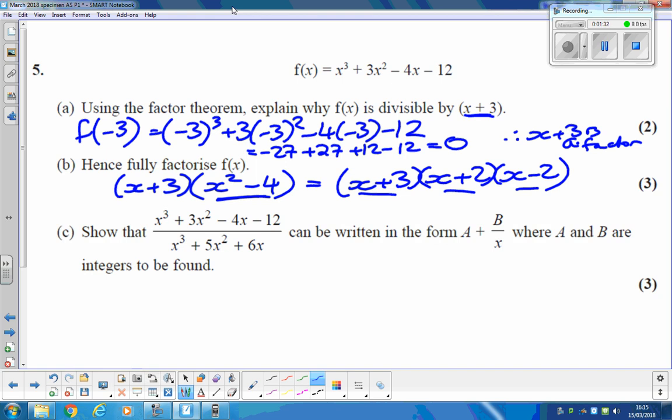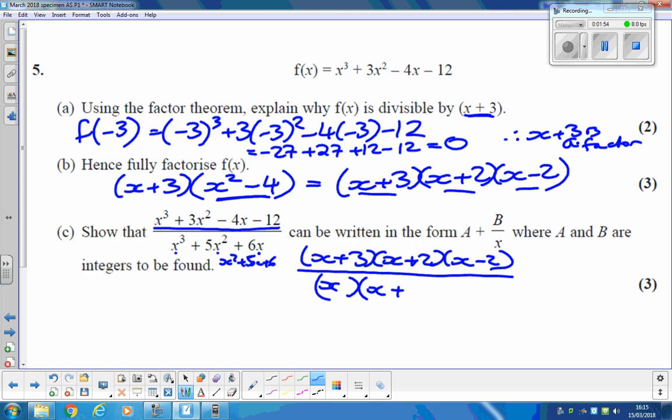So, the last part, we've already done all of this, so that's that thing we've just done. We're going to have to factorise the bottom bit as well. Some people didn't spot this in the mock, look, there's an x in all of these. So, just take the factor of x out first of all, and that leaves you with x squared plus 5x plus 6. If that's really stressing you, use your calculator, but it is x plus 2 and x plus 3.